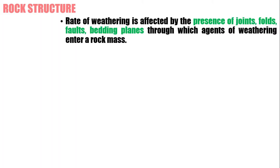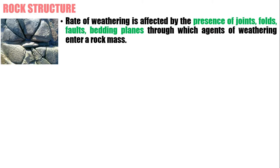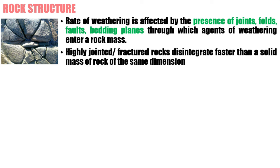Next, we have rock structure. The rate of weathering is affected by the presence of joints, folds, faults, and bedding planes, through which agents of weathering enter a rock mass. Agents can go through joints and faults directly. Highly jointed or fractured rocks disintegrate faster than a solid mass of rock of the same dimension, because agents go directly to the joints or fractures.